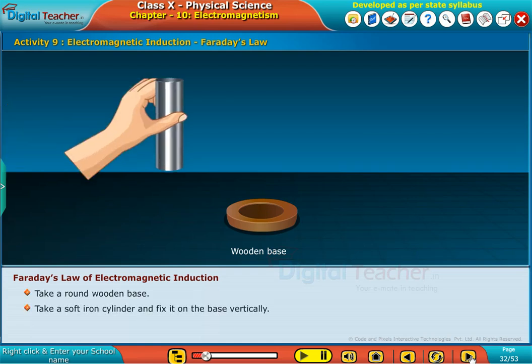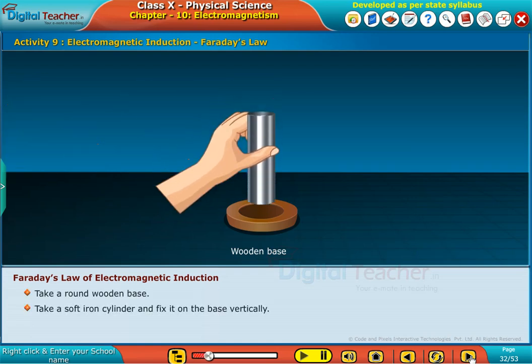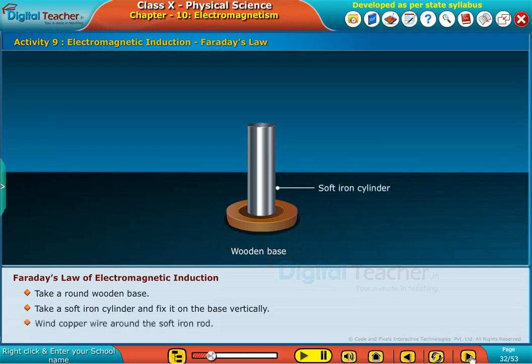Take a soft iron cylinder and fix it on the base vertically. Wind copper wire around the soft iron rod.